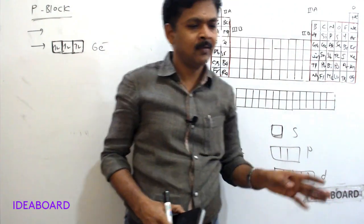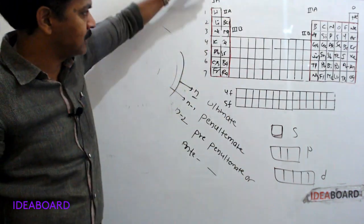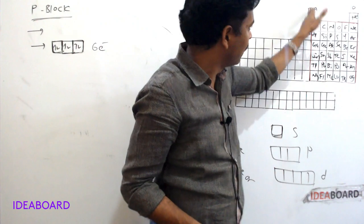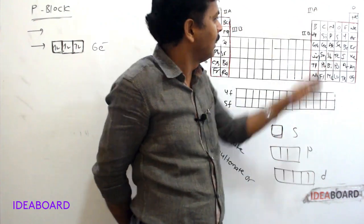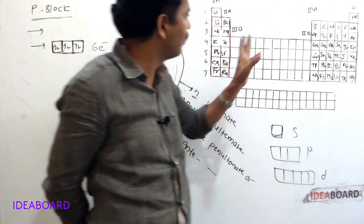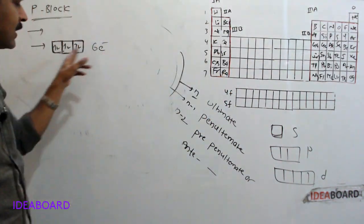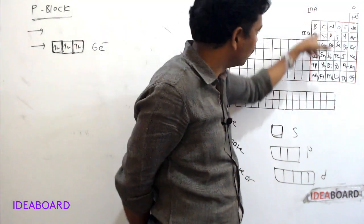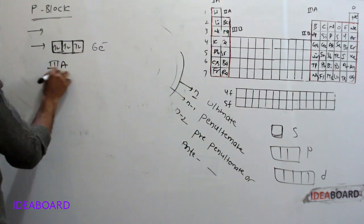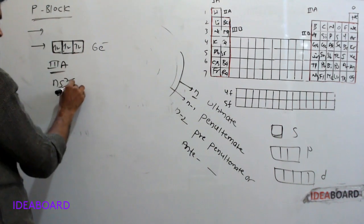Don't worry about memorizing all these element names at once, as there are dedicated lessons for each group. For third A group elements, the valence orbit electronic configuration is Ns2, Np1.